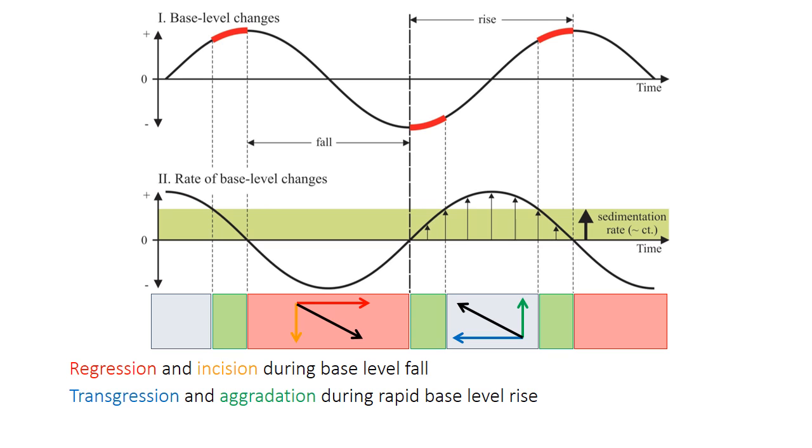Finally, base level rise, base level can rise, but it can rise at a rate slower than sediment is accumulating. This occurs at the beginning and at the end of base level rise when the rate is slower. So because base level is still rising, sediments and the shoreline will aggrade. But the sediment will kind of overfill the available accommodation space, and the shoreline will regress. So the little arrows indicate the trajectory of the shoreline, and its components of regression, transgression, incision, and aggradation.